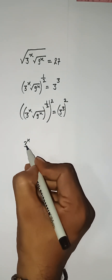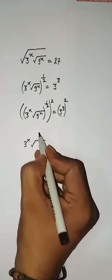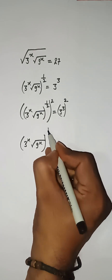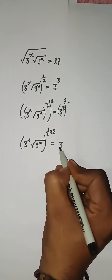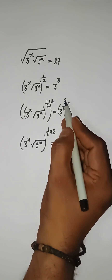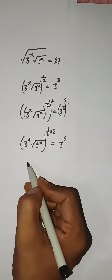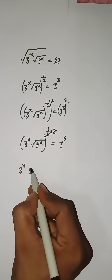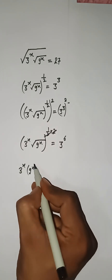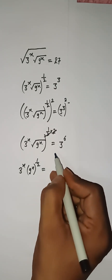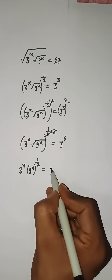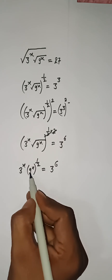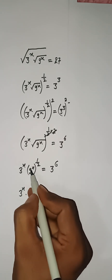We have root under 3 to the power x, and then 9 to the power x, and we have 1 by 2 multiplied with 2. Then 3 to the power 3, so 3 is going to multiply with 2, giving us 6. This 2 and this 2 will cancel, so we have 3 to the power x and then 9 to the power x with power 1 by 2, and here 1 remains, so we get 3 to the power 6.